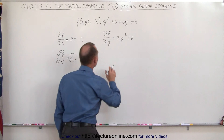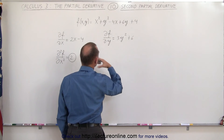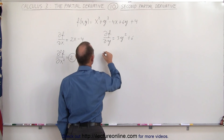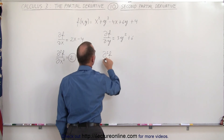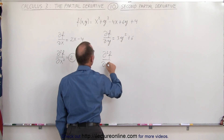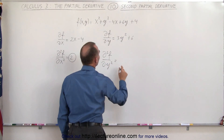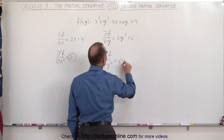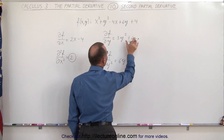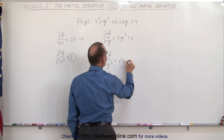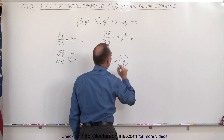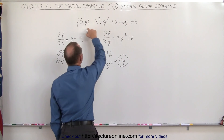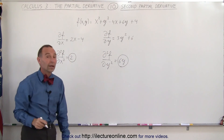Now we can take the second derivative of that function with respect to y — the second partial derivative, which is written like this, with respect to y. The derivative of this would be 6 times y to the first power. The derivative of this is a constant. This then becomes the second partial derivative of the function with respect to y.